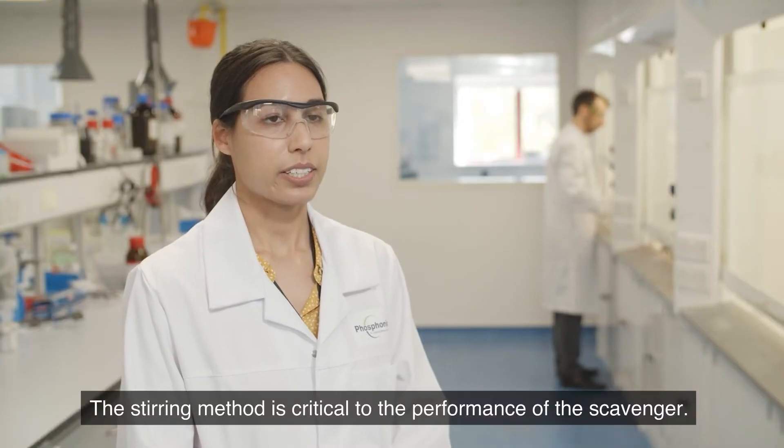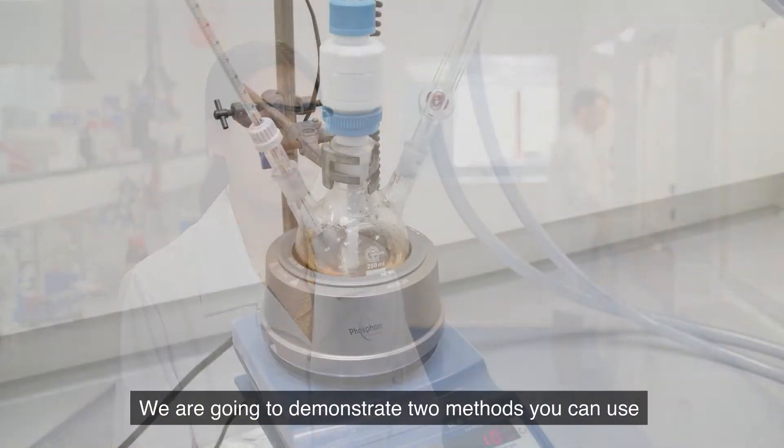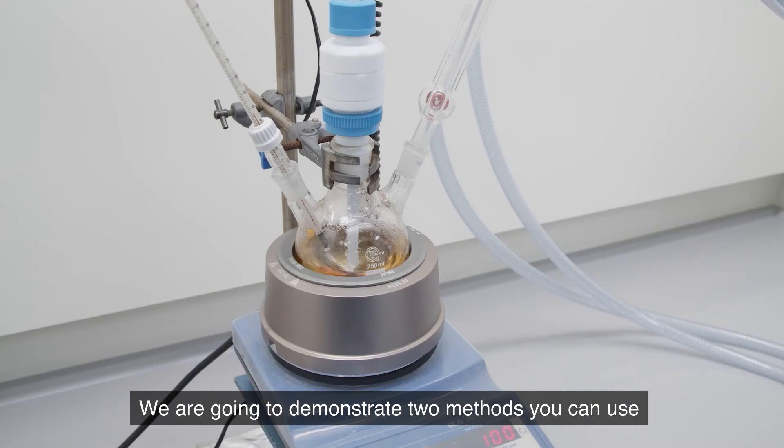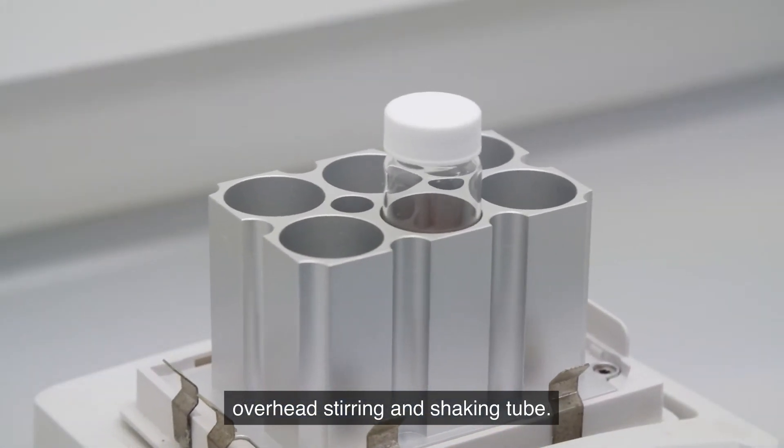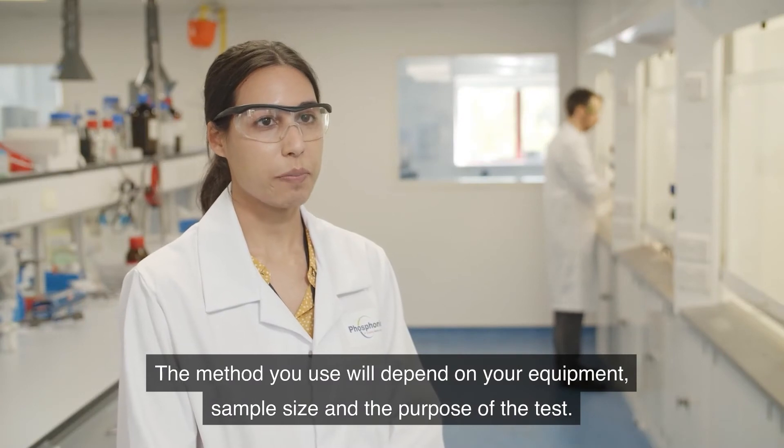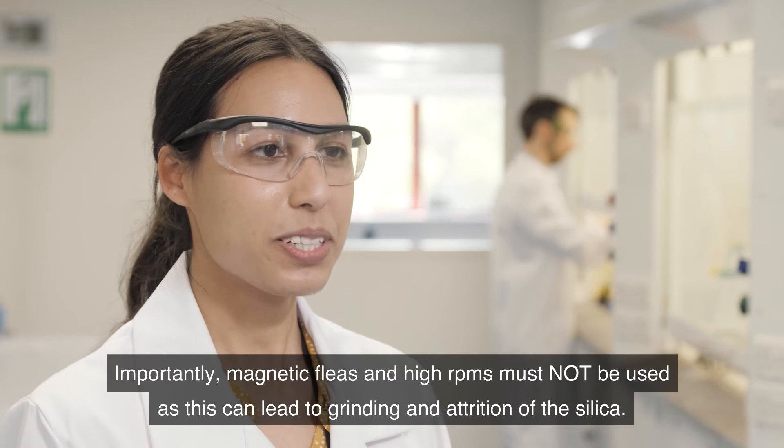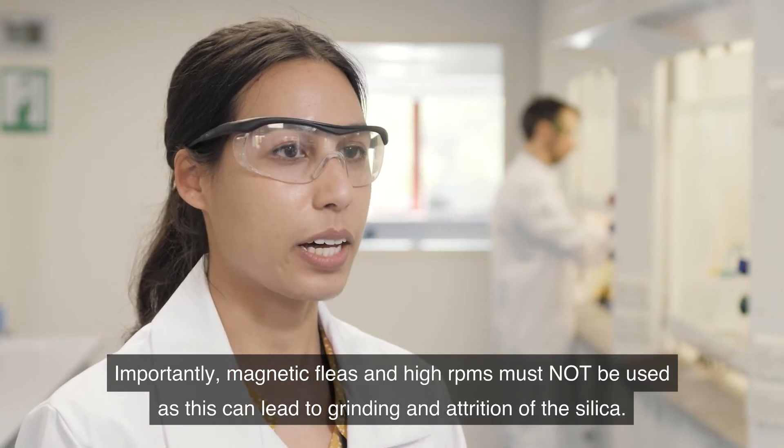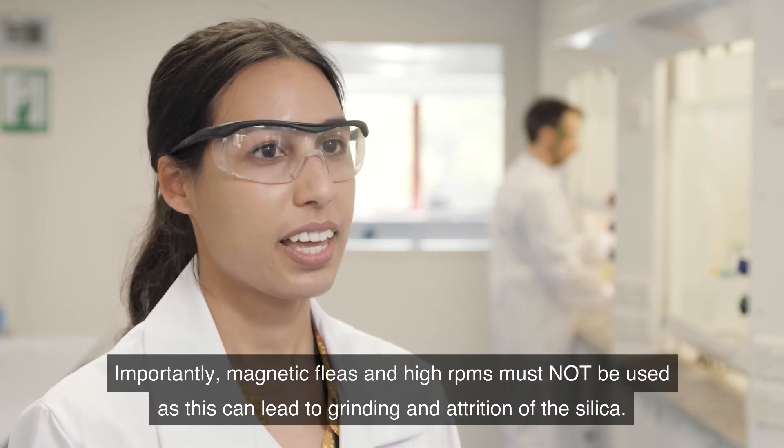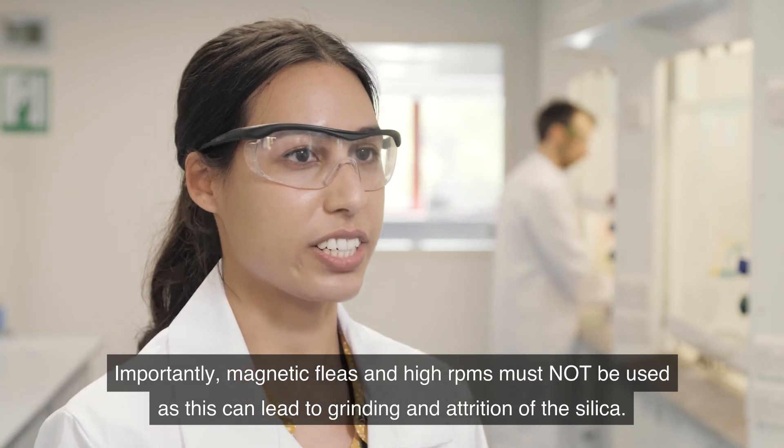The stirring method is critical to the performance of the scavenger. We are going to demonstrate two methods you can use: overhead stirring and shaking tube. The method you use will depend on your equipment, sample size and the purpose of the test. Importantly, magnetic fleas and high RPMs must not be used as this can lead to grinding and attrition of the silica.